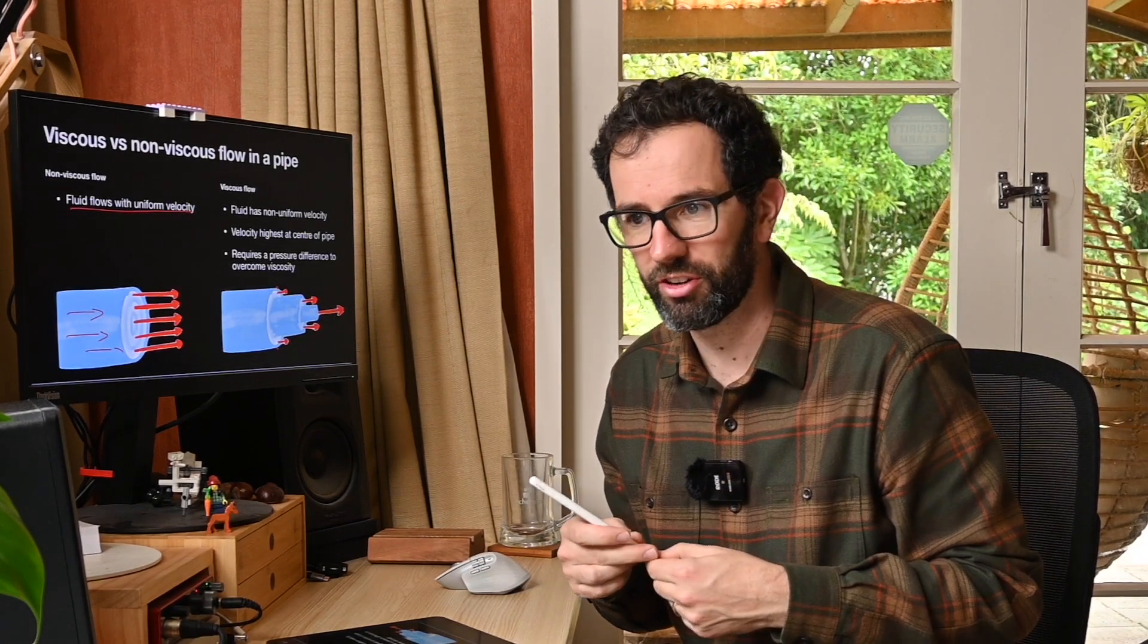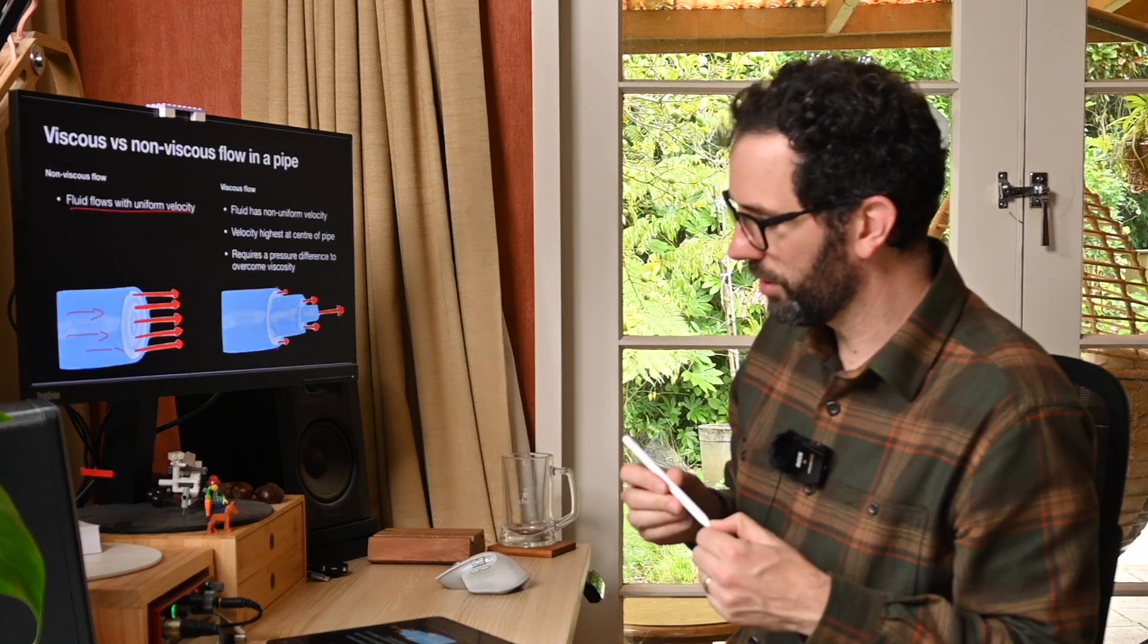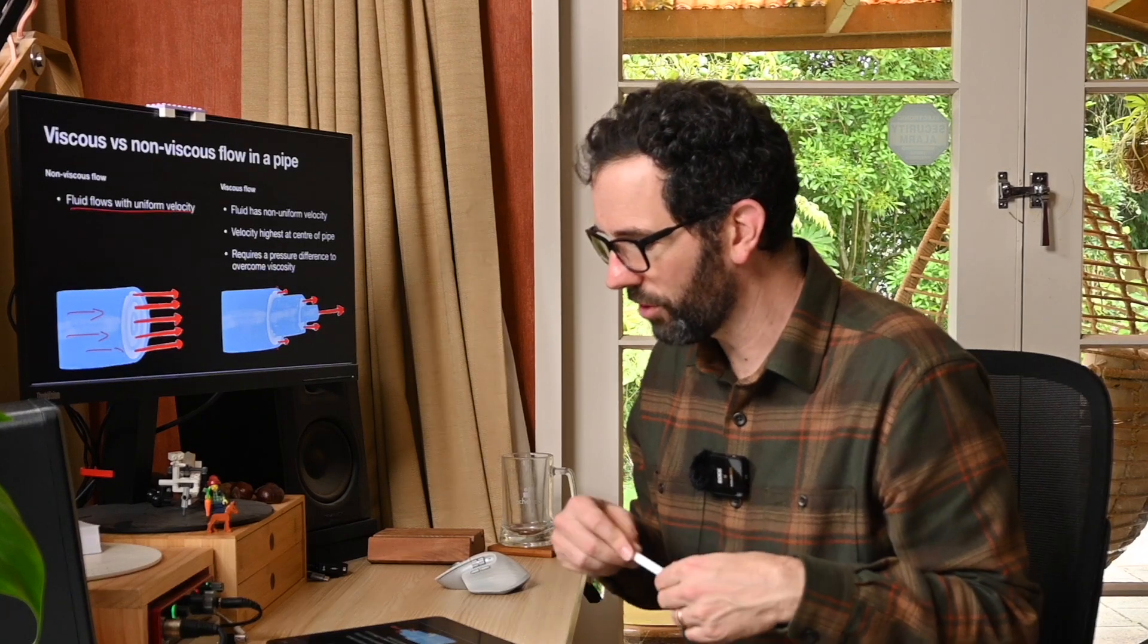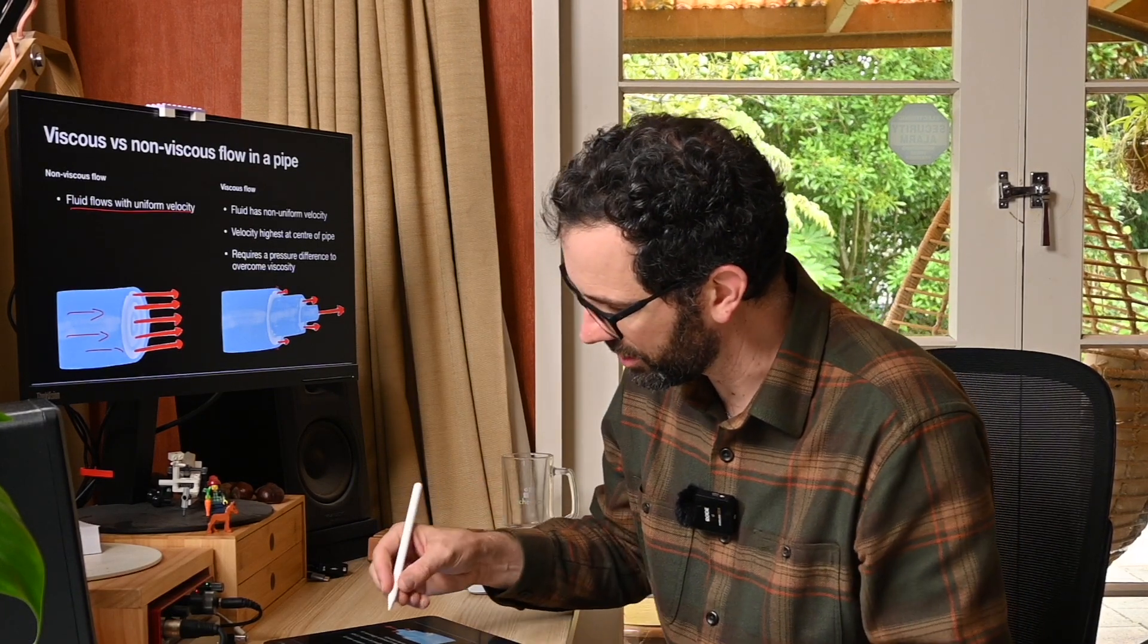That basically requires some energy and it's a little bit like a friction force. So the more of that you get, the more energy it's going to lose. And so the result that we see is that our pressure is actually going to decrease along the pipe.